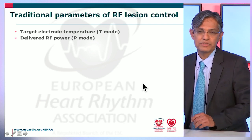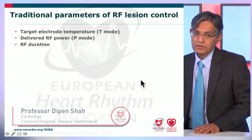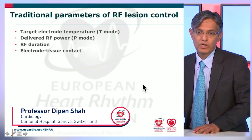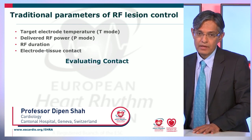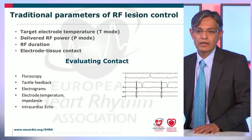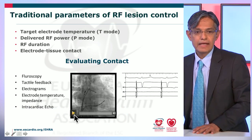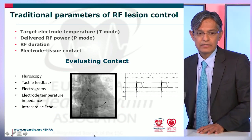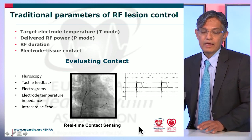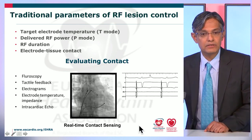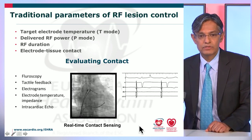You are all, or many of you are aware of the traditional parameters of lesion control for radiofrequency catheter ablation: target electrode temperature in temperature mode, delivered radiofrequency power for power mode, duration of RF delivery, and electrode tissue contact, which is very important and has been, till recently, very difficult to quantitate. Contact evaluation has been more an art than a science, incorporating fluoroscopy, tactile feedback, electrograms, electrode temperature, impedance, and in some cases intracardiac echo-based visualization. The availability of real-time contact sensing has allowed us to gain a new and valuable parameter of controlling lesion size.